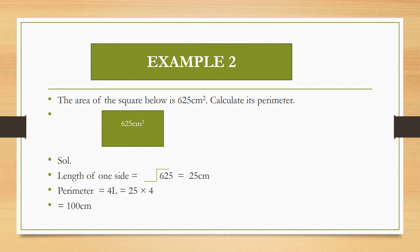In this example, Example 2, we are saying that the area of the square below is 625cm². Calculate its perimeter. This question is very easy, but ask yourself: if someone gives you the area of a square, are you able to find the length of one side? Remember, area of a square is length times length, or you square the length. That means if you find the square root of 625, you can find the length.